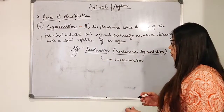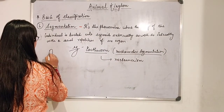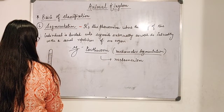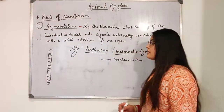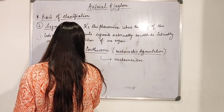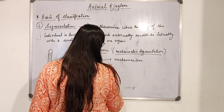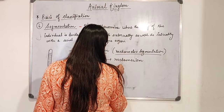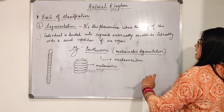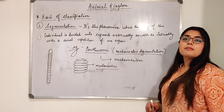In the body of the earthworm, you must have seen there are lines — these are not exactly lines, these are the segments. The body is internally and externally divided into these segments. These individual units are called metameres, and the process by which the body is divided is known as metamerism. The segmentation shown here is called metameric segmentation.